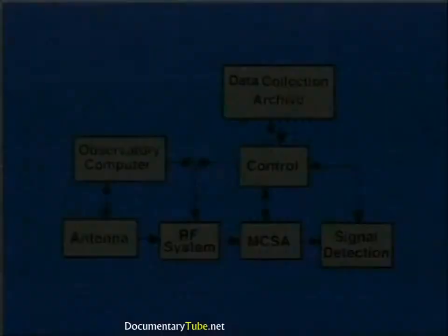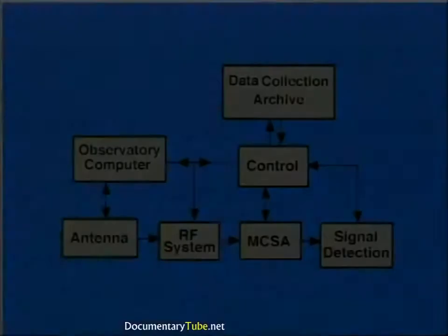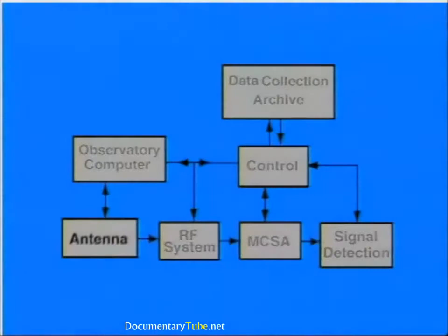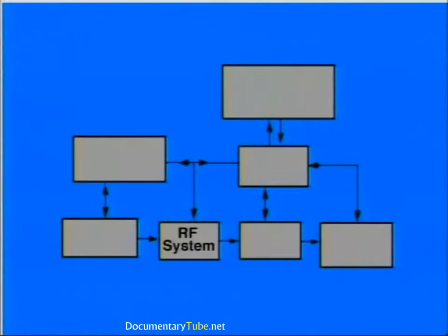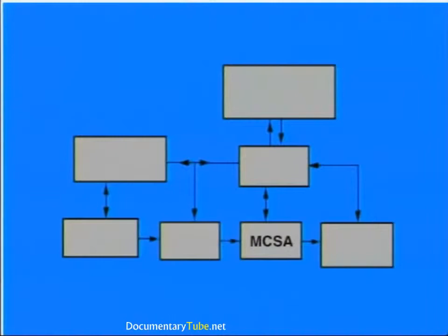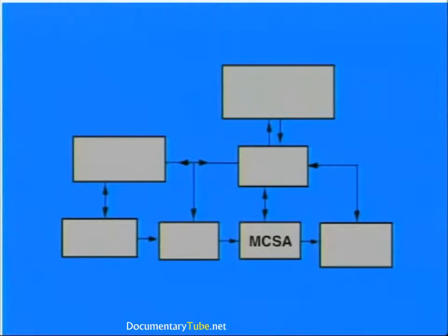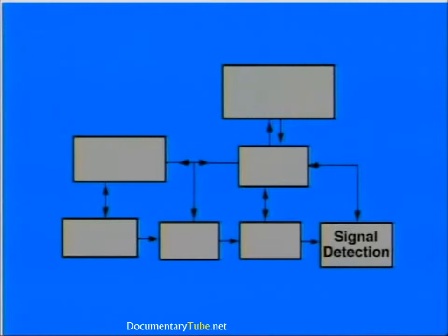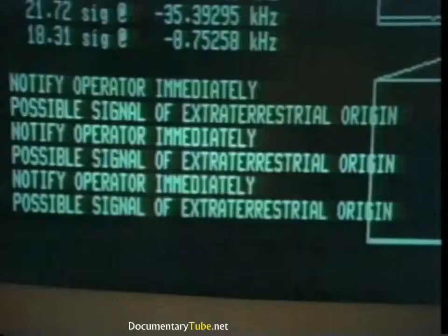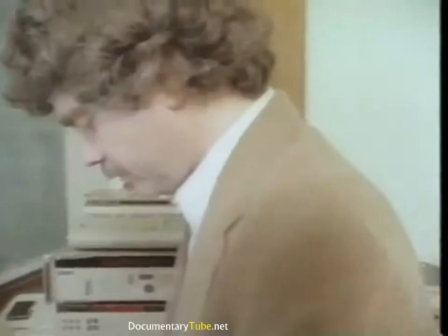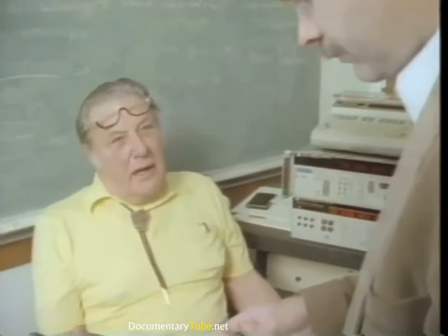The overall prototype of the Project Phoenix system is as follows. The antenna picks up the incoming waves and sends the signal to the radio frequency subsystem. The radio frequency subsystem sends the input to the multi-channel spectrum analyzer (MCSA), which has 28 million separate individual channels. Its output is then sent to the signal detection subsystem, which looks at all channels to see if there is a strong signal. Strong signals are then sent to the data collection archive subsystem which stores the information. On receiving a signal, the SETI scientists are alerted and follow procedures needed to verify the signal.